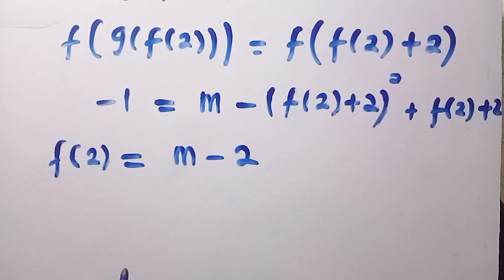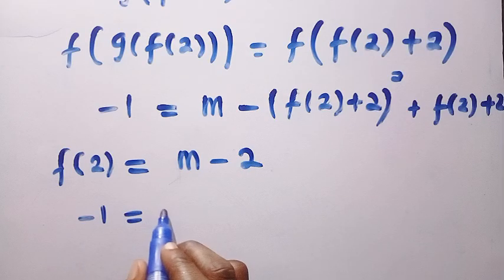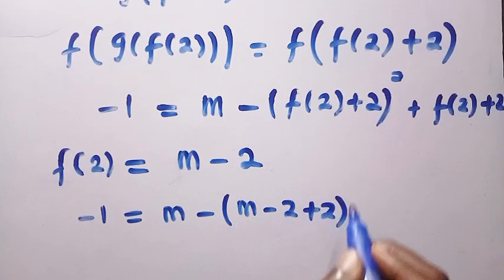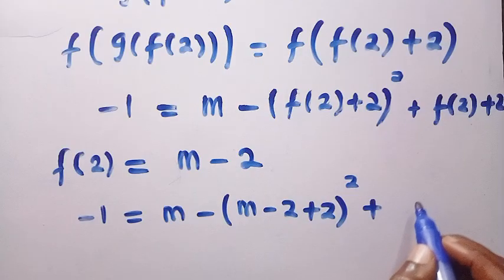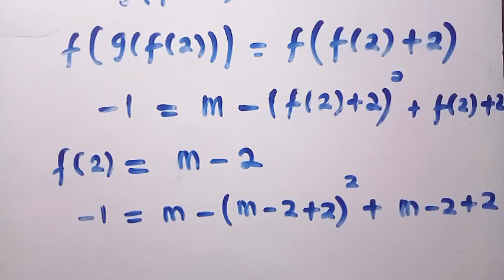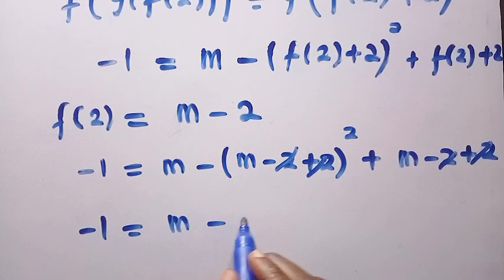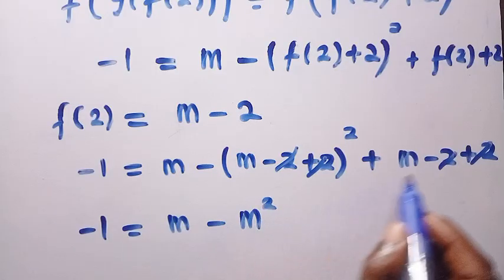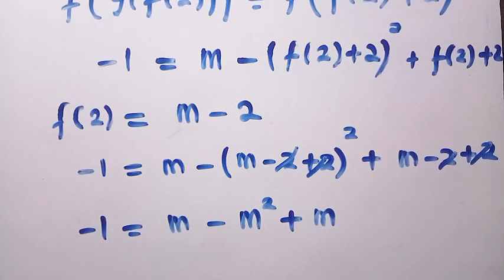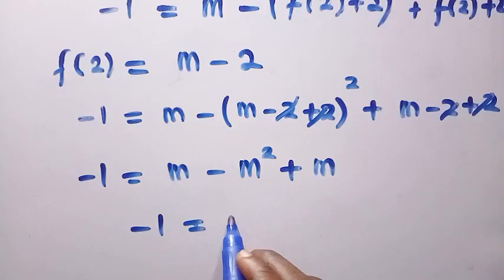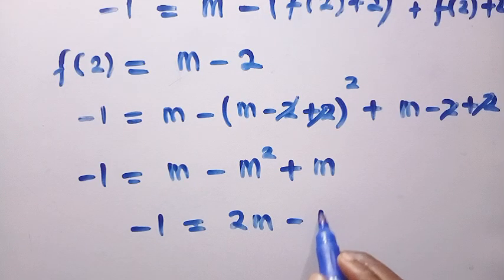Now we start replacing. So by substituting f(2) = m - 2: -1 = m - (m - 2 + 2)² + (m - 2 + 2). The -2 + 2 cancels in both places, giving us -1 = m - m² + m, which simplifies to -1 = 2m - m².